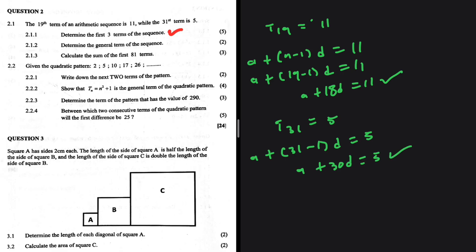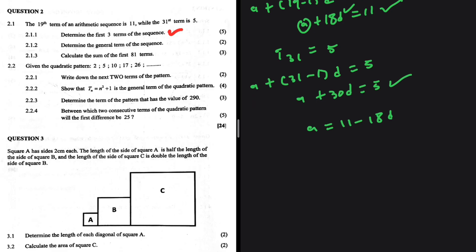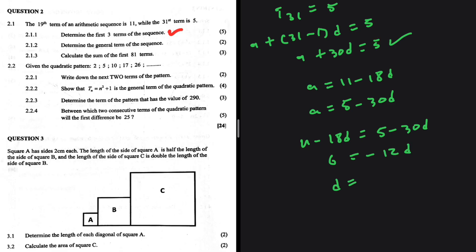We are looking for the first three terms. If we find a and d we can find any term. Making a the subject in both equations gives a = 11 minus 18d and a = 5 minus 30d. Setting them equal: 11 minus 18d equals 5 minus 30d, so 6 equals negative 12d, giving d equals negative 1 over 2.